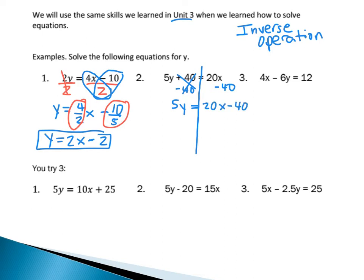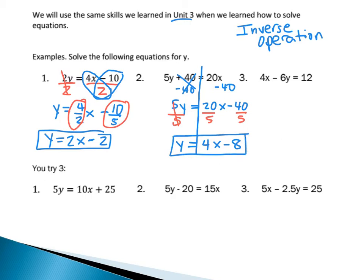Then I have 5y, so I divide by 5. I'll divide each of the terms by 5: 20 divided by 5 and 40 divided by 5. The left side leaves me with y. The right side: 20 divided by 5 is 4, and I still have the x. Minus 40 divided by 5 is 8. So my equation becomes y equals 4x minus 8.